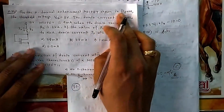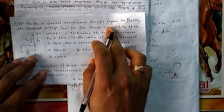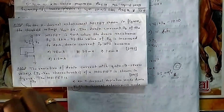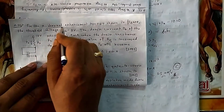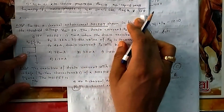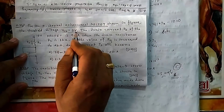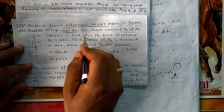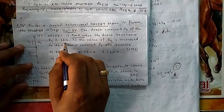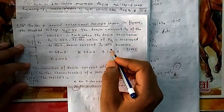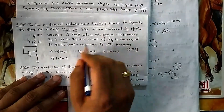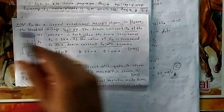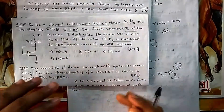Question 32: For an N-channel enhancement MOSFET, the threshold voltage V_T = 2 V. The drain current I_D = 4 mA when drain resistance R_D = 1 kΩ. Find I_D when R_D is increased to 4 kΩ.